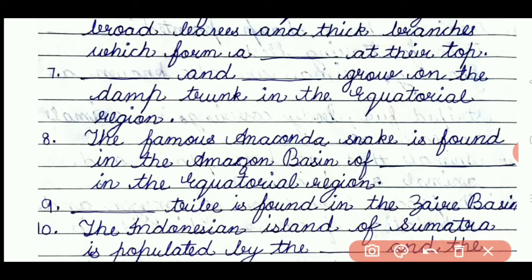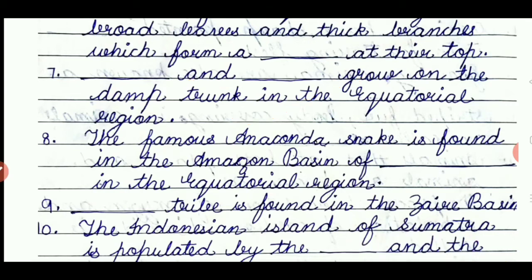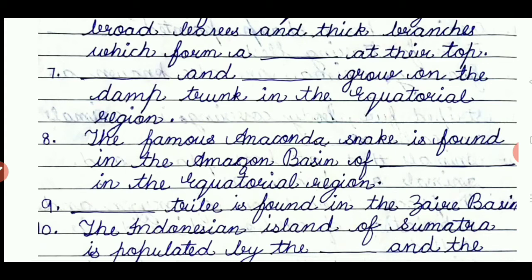Question number seven: dash and dash grow on the damp trunk in the equatorial region. The answer will be lichen and mosses. Question number eight: the famous anaconda snake is found in the Amazon basin of dash in the equatorial region. The answer will be South America.